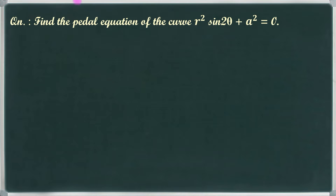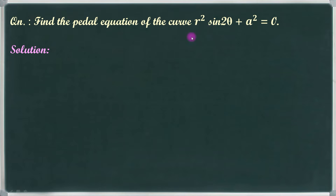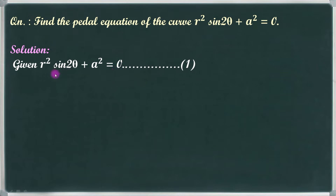Let's take an example. Find the pedal equation of the curve r squared into sin 2θ plus a squared equal to 0. Let's call this equation number 1.